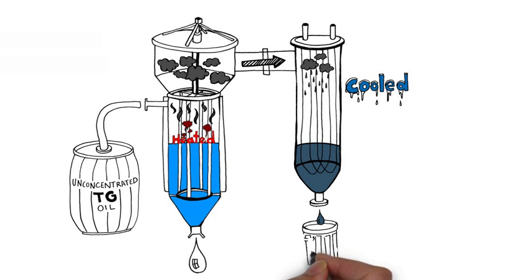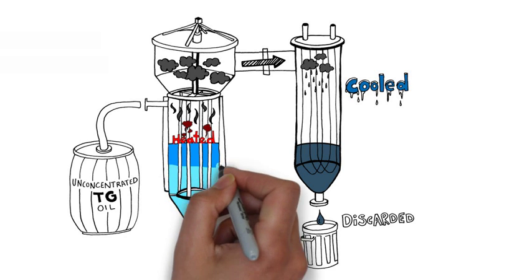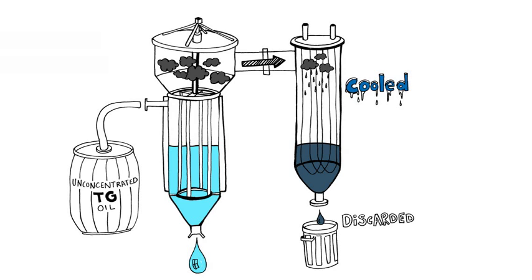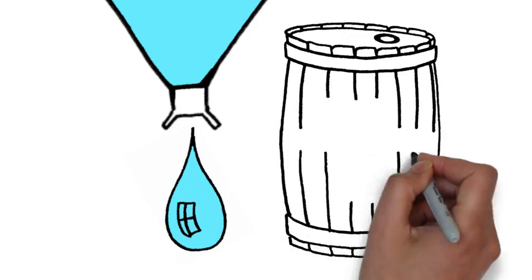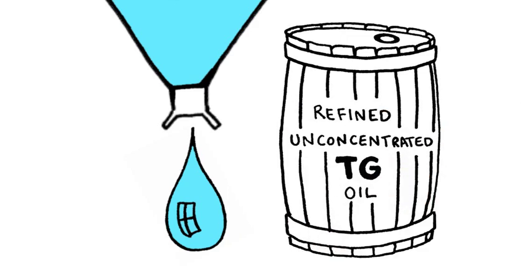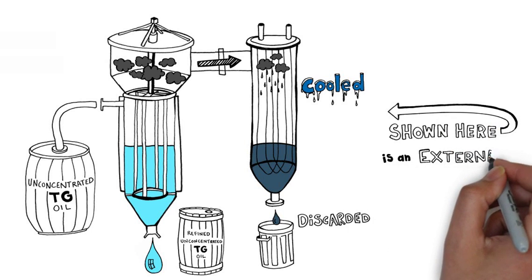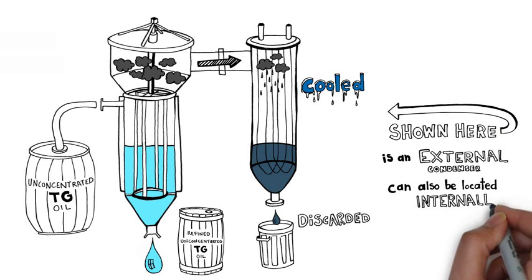As the gas exits the system, the oil in the evaporator gets cleaner than it was when it entered the evaporator to begin with. This triglyceride oil is then collected for use and is considered refined, unconcentrated oil. The condenser shown here is an external condenser, but condensers can also be located internally.